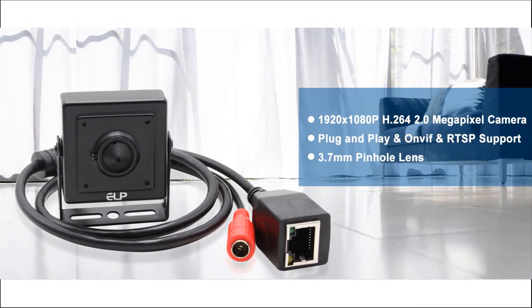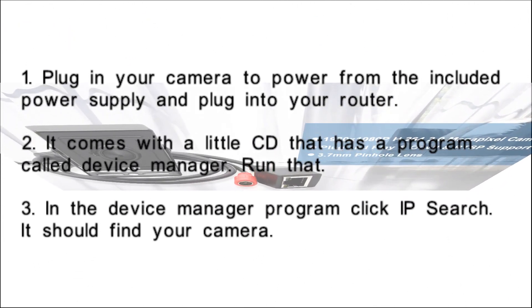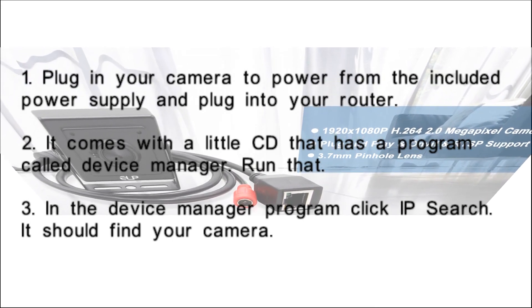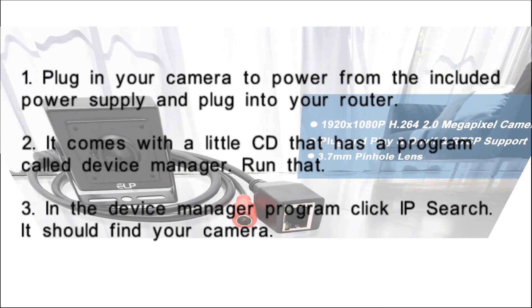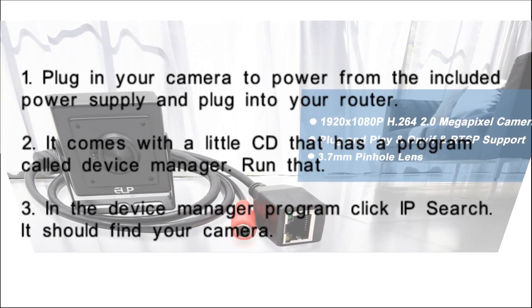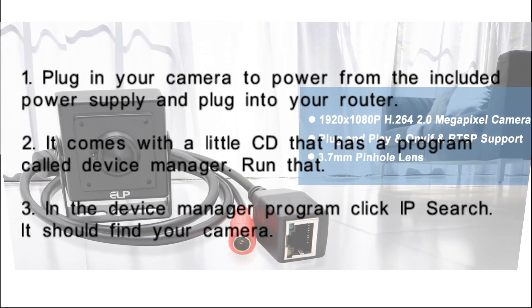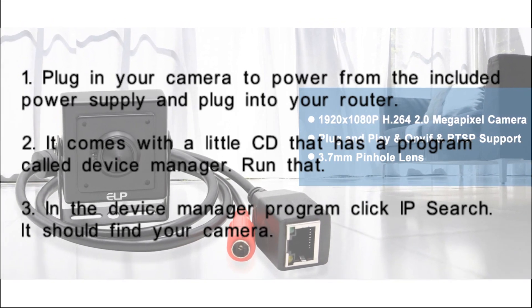Step one: plug in your camera to power from the included power supply and plug into your router. Step two: it comes with a little CD that has a program called Device Manager — run that. Step three: in the Device Manager program, click IP Search — it should find your camera.